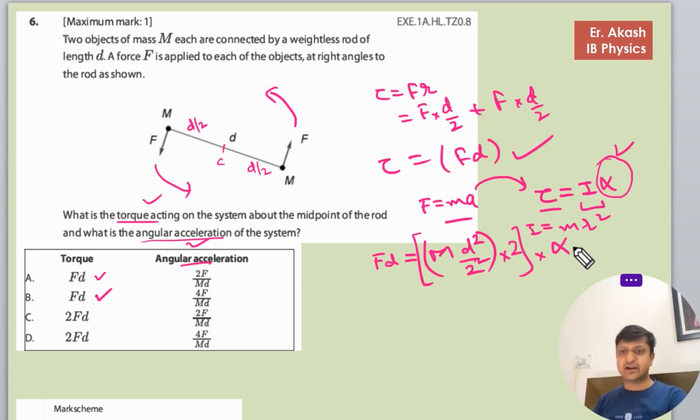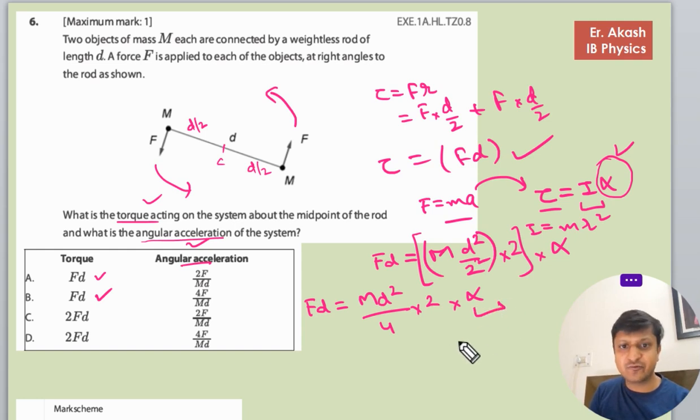So there are two objects, so we will multiply this with 2 into the angular acceleration alpha. So I will just write in a neat and clean manner: Fd equals to md squared upon 4 into 2 into alpha. This alpha we have to find out. So d goes off, this 4 with this is 2, so 2F divided by md equals to alpha.